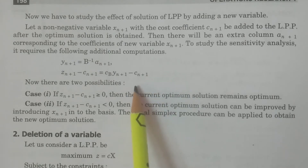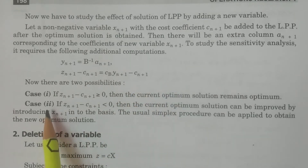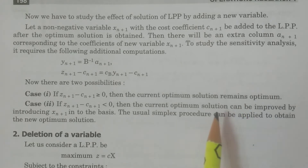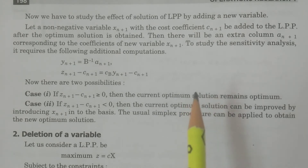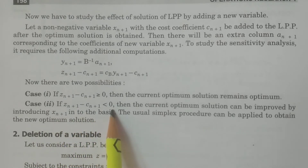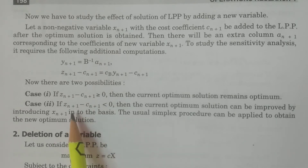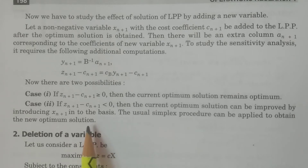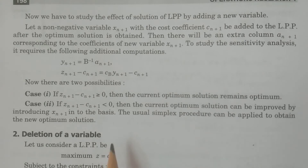After completion of these calculations, we may face two possibilities. Case 1: if zn+1 minus cn+1 is greater than or equal to 0, then the current optimum solution remains optimum — there will be no changes in the optimum solution. Case 2: if zn+1 minus cn+1 is less than 0, that is negative, then the current optimum solution can be improved by introducing Xn+1 into the basis. You have to introduce Xn+1 into the basis and apply the usual simplex procedure to get the new optimum solution. These are the two cases for the addition of a variable.